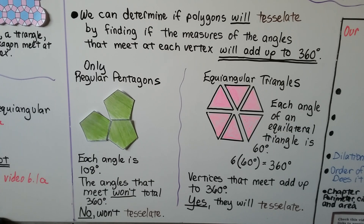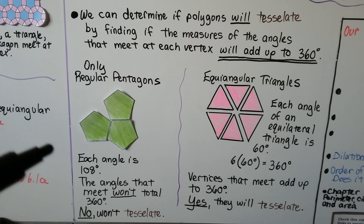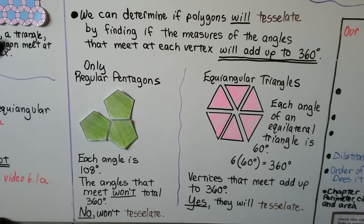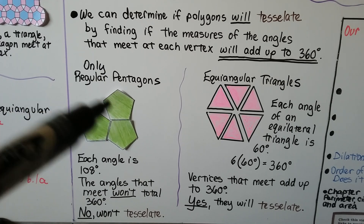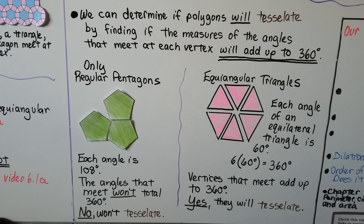We can determine if polygons will tessellate by finding whether the angles meeting at each vertex add up to 360 degrees. Regular pentagons each have interior angles of 108 degrees, and they won't total 360 degrees, so regular pentagons alone won't tessellate. We'd need a triangle added in, making it semi-regular. For equilateral triangles, each angle is 60 degrees, and 6 times 60 equals 360 degrees, so yes, they will tessellate.